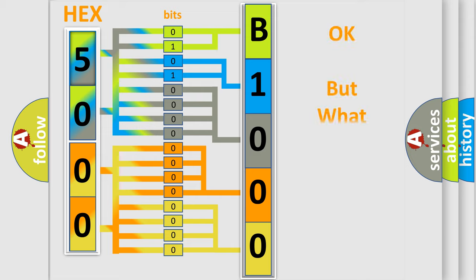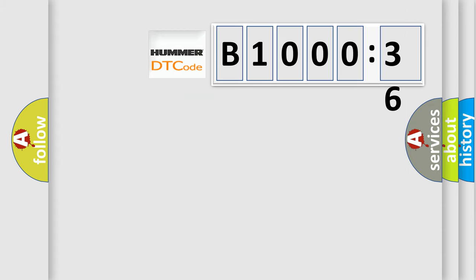We now know in what way the diagnostic tool translates the received information into a more comprehensible format. The number itself does not make sense to us if we cannot assign information about what it actually expresses. So, what does the diagnostic trouble code B100036 interpret specifically for Hummer car manufacturers?